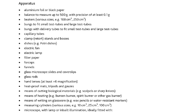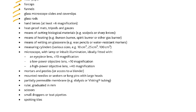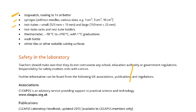Apparatus you should be familiar with and must know: aluminium foil, balance, beakers, bungs to fit small and large test tubes, bungs with delivery tubes, capillary tubes, clamp, dishes, electric fan, electric lamp, filter paper, forceps, funnels, glass microscope slides, glass rods, hand lenses, heatproof mats, tripods and gauzes, means of cutting biological materials such as scalpels or sharp knives, means of heating such as Bunsen burner or spirit burner, means of writing on glassware such as wax pencil or marker, measuring cylinders, microscope, mortars and pestle, mounted needles, partially permeable membrane, ruler, scissors, small dropper, spotting tile, stopwatch, syringes, test tubes, test tube racks, thermometer, wash bottle, and white tile. You must know these names because when writing your planning answers you must use them.